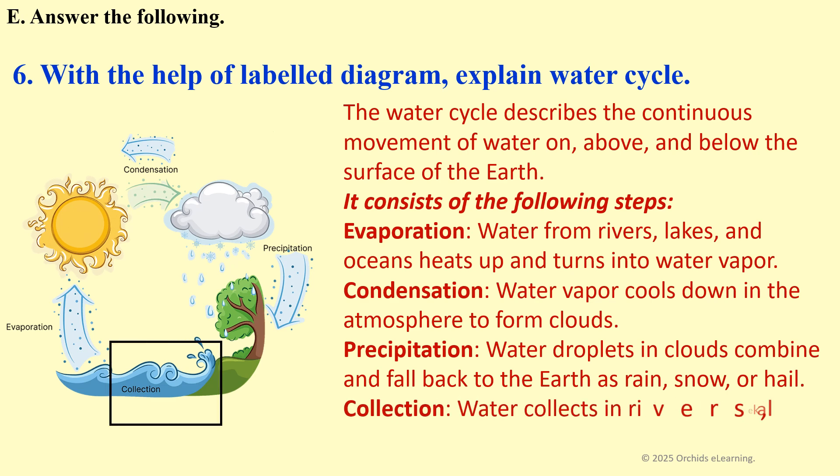Precipitation: Water collects in rivers, lakes, oceans, and underground, starting the cycle again.